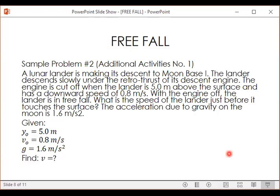Next sample problem we have from Additional Activities No. 1. A lunar lander is making its descent to Moonbase 1. The lander descends slowly under the retro-thrust of its descent engine. The engine is cut off when the lander is 5 meters above the surface and has a downward speed of 0.8 meters per second. With the engine off, the lander is in freefall.